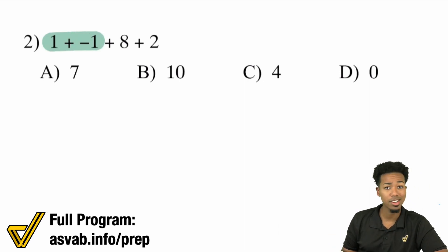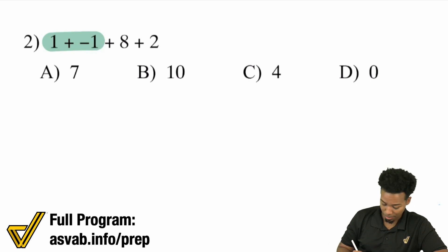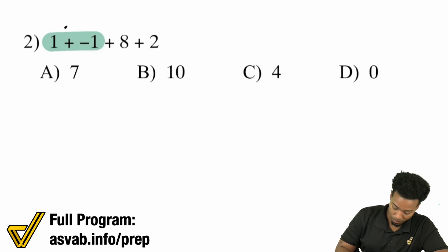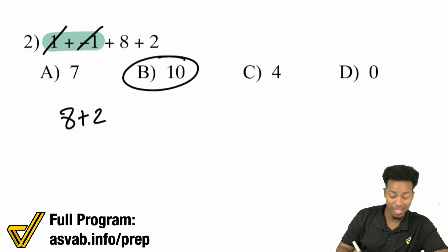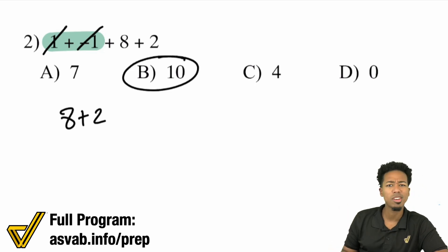So one plus negative one is one minus one, and that becomes zero. This actually cancels out, so we're just left with eight plus two — that's ten.